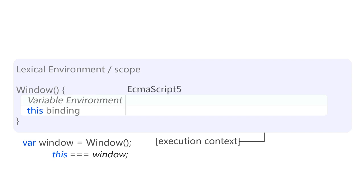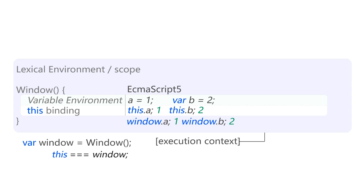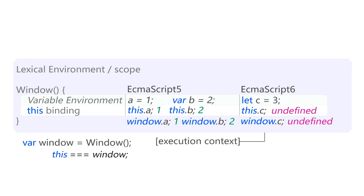In ECMAScript 5, we have variable definitions that can look like this — you don't have to use the var keyword, but if you do, you're basically doing the same thing. The this keyword will actually have the properties we've just defined, and they will equal exactly the same values assigned through these variable definitions. Naturally, because this is just a link to the window object, window.a and window.b will equal the same values. But in ECMAScript 6, if you define a variable using the let keyword and try to output it as this.c or window.c, you'll notice they are undefined. ECMAScript 6 draws a better separation between variable environment and this binding — this property simply doesn't even exist at that point.